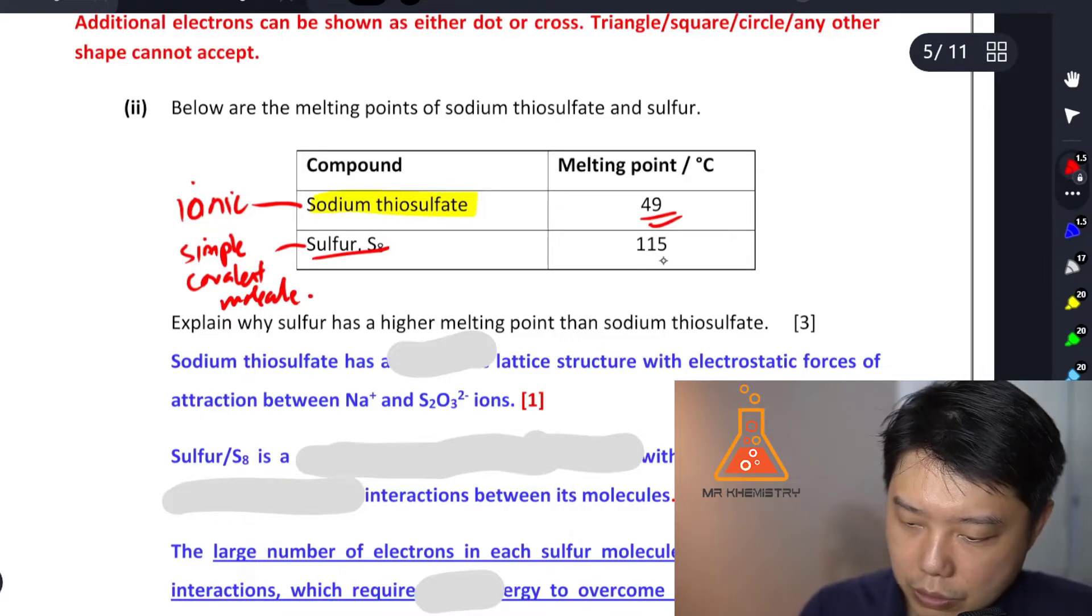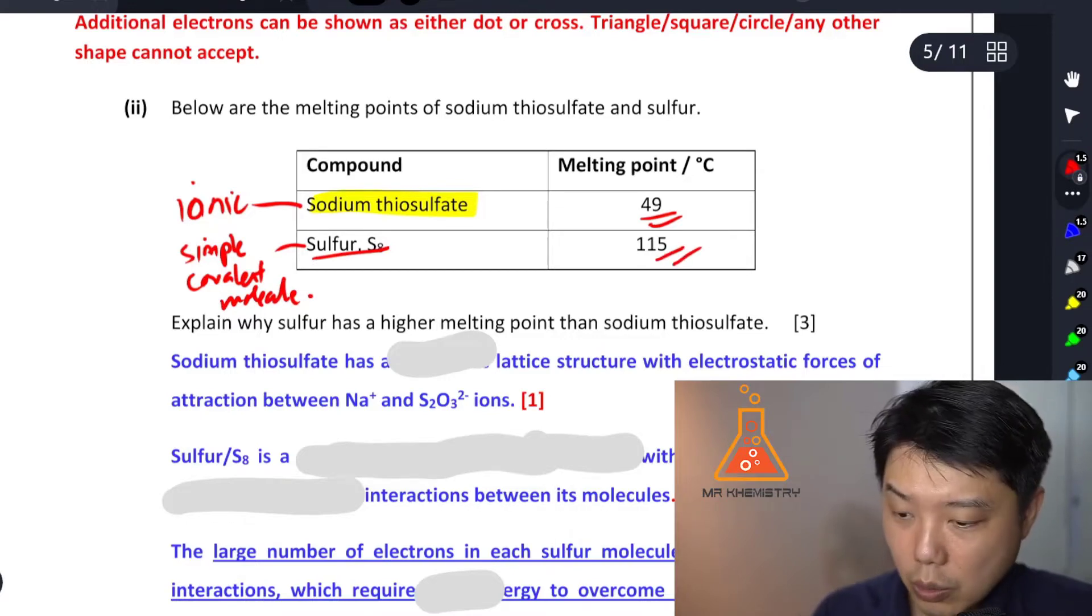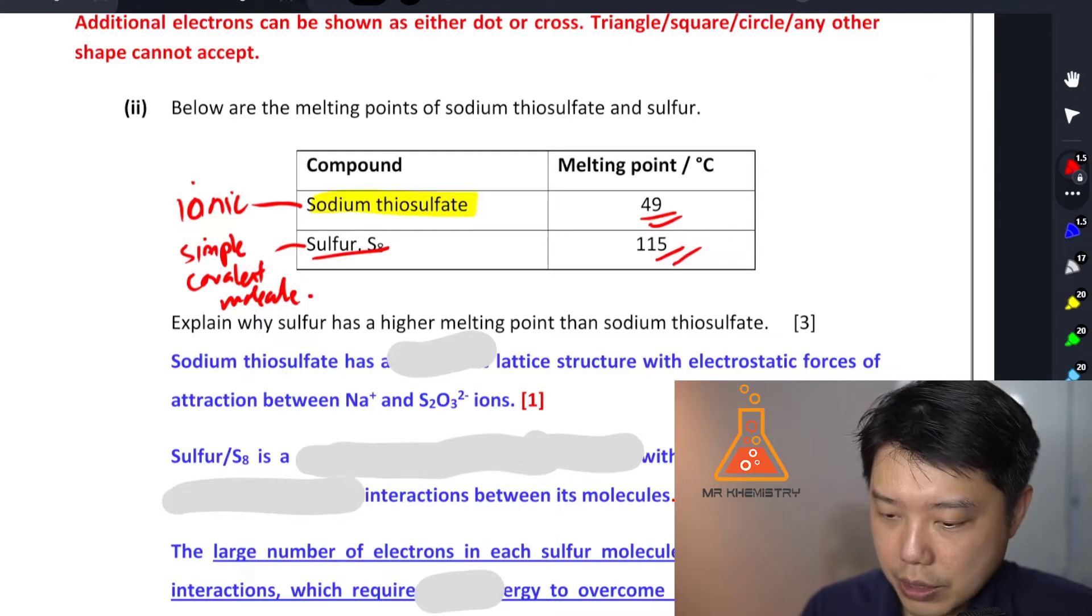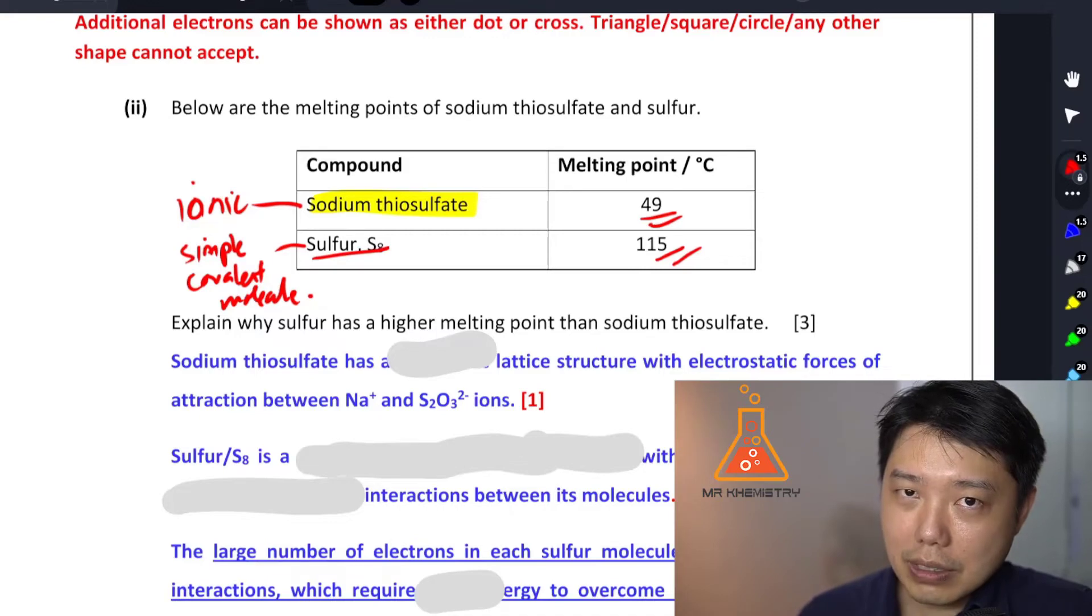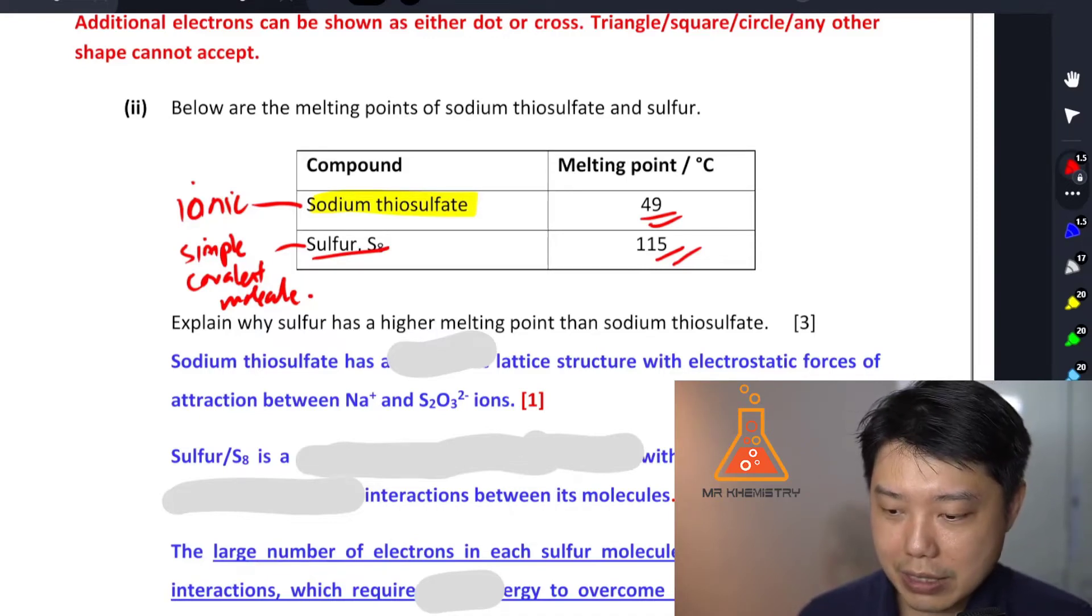Okay, so definitely you expect it to be a low melting point as is shown here. So how are we going to make sense of this? Why is the ionic compound having a lower melting point compared to a simple covalent? Okay, so in this question you definitely have to address the data point, the observation that is given to you.